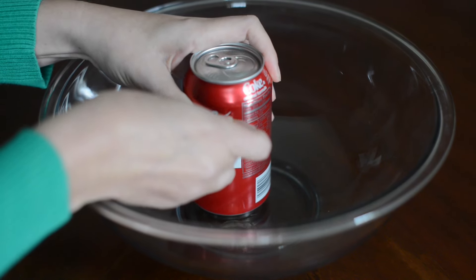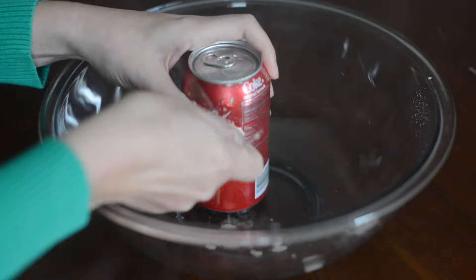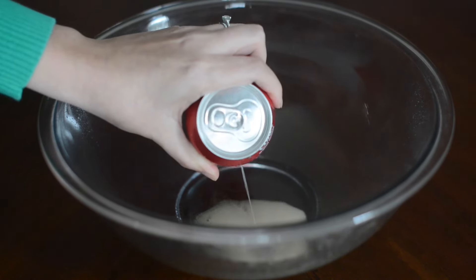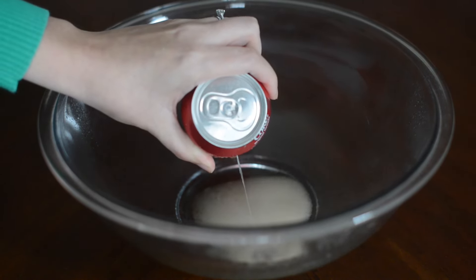Then carefully pierce a hole in the side of your pop can and empty it to about a third of the way empty.